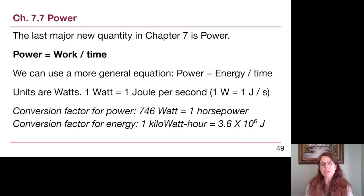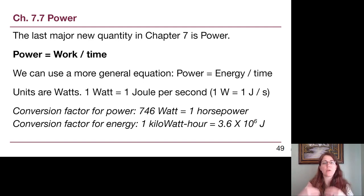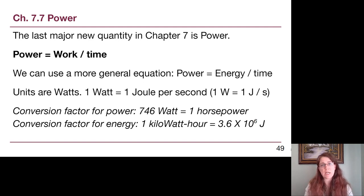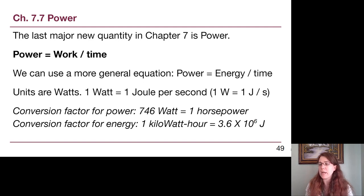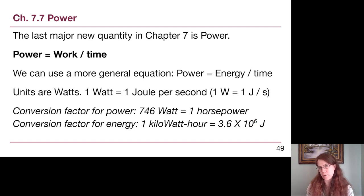The equation in this section is that power is defined as the amount of work over the elapsed time. So if you are adding energy to a system at a certain rate, we can figure out what that rate is using the idea of power. More generally, power is energy per unit time — the specific energy associated with a process divided by how quickly we are adding to that energy term.